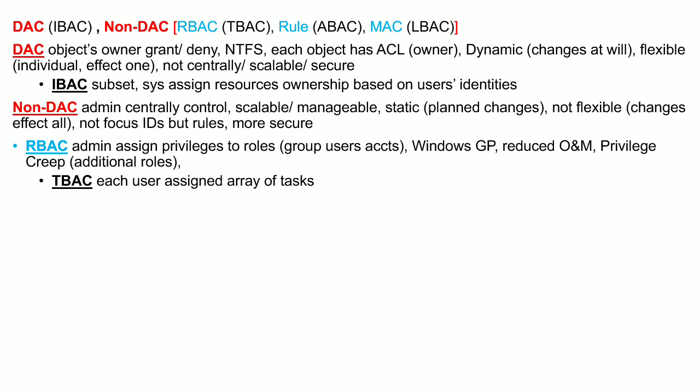In RBAC there is reduced operations and maintenance overhead. However, there is an issue of privilege creep, where a user gets more access to resources than required. Over time, users are assigned different roles and each role has a particular set of privileges, which may not all be required. Once assigned to multiple roles, a user gets unnecessary privileges to resources.